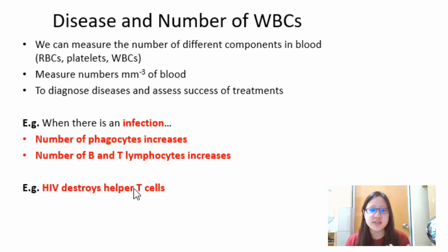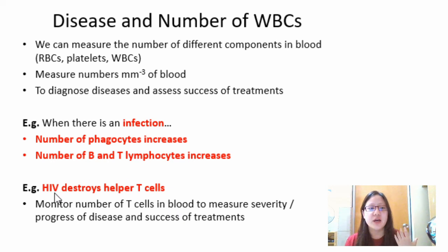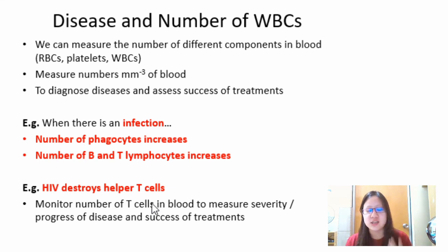Another example is HIV. Since HIV destroys helper T cells, we can monitor disease progression by tracking the number of T cells in the blood. If HIV is very active and destroying many helper T cells, the count will be low — so more severe disease correlates with fewer T helper cells.